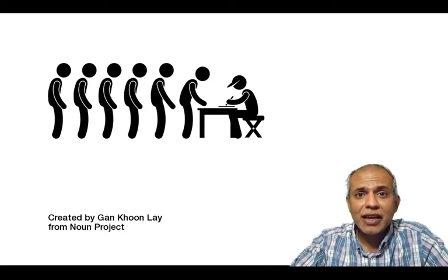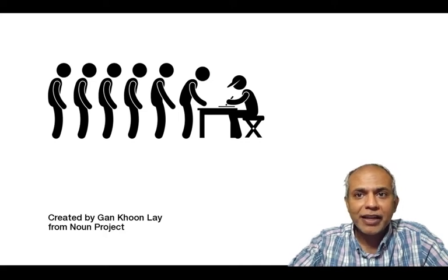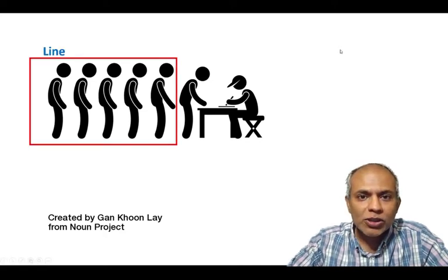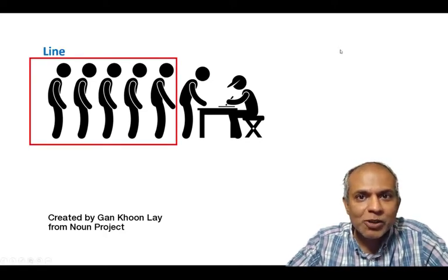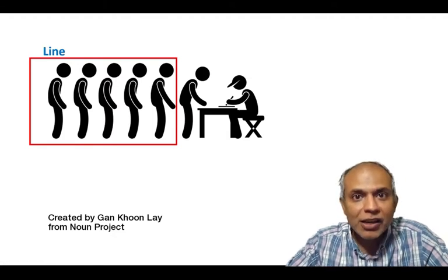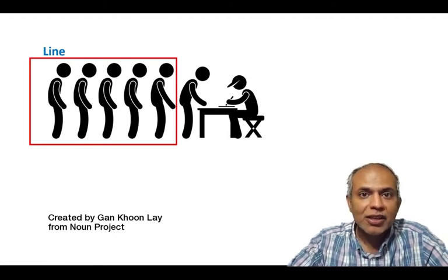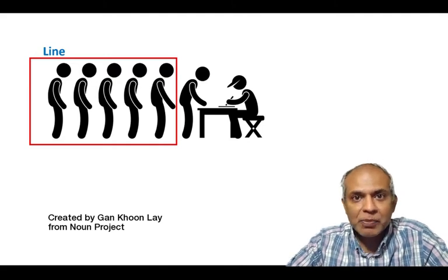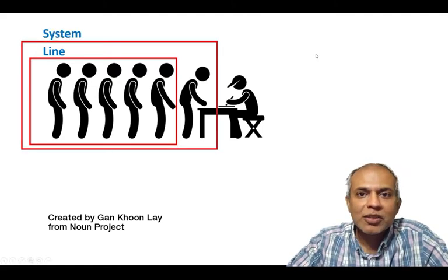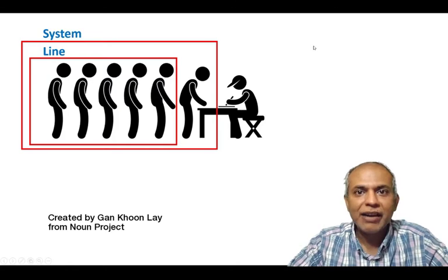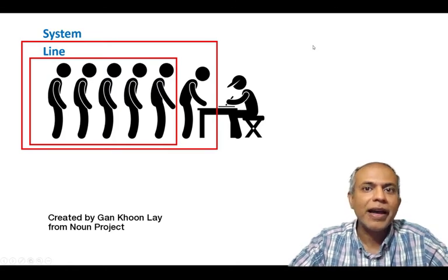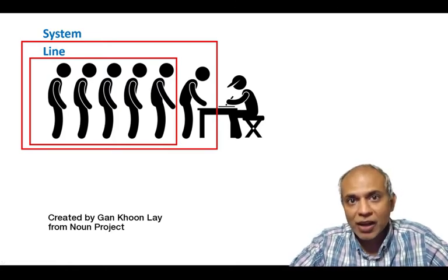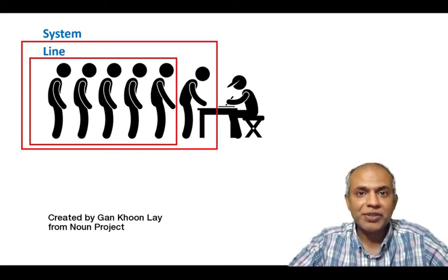The first terminology is this idea of a line. All those customers who are waiting to be served, who are not currently being served, are said to be part of the line. And if we expand the line to include the customers who are being served, we have what we call the system. So customers in line plus the customers being served create the system.